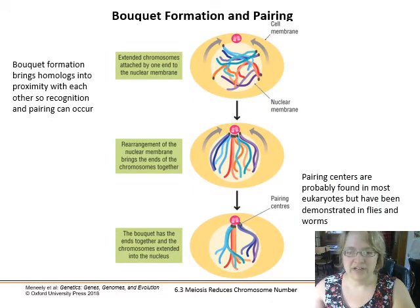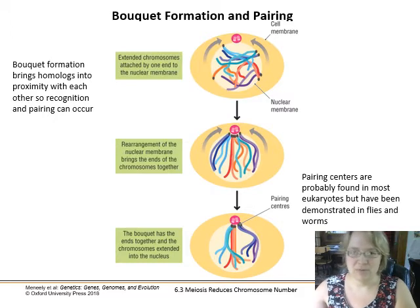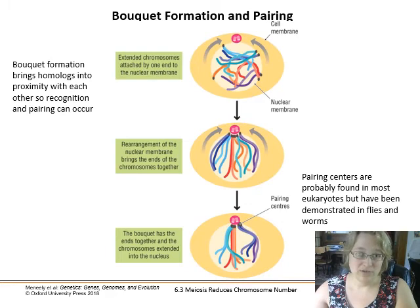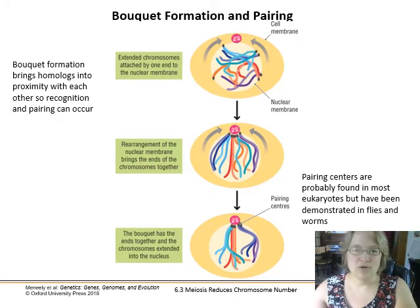One key feature of meiosis one not seen in mitosis and not occurring in meiosis two is bouquet formation. For a long time people didn't know exactly how tetrads were formed, but through experiments and staining we found that one end of each chromosome gets pulled toward the cell membrane near the centrioles. This brings the homologous chromosomes into proximity with each other, and then they start recognition pairing.